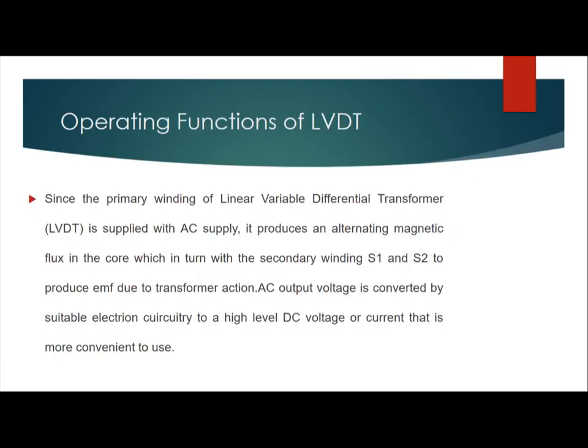In the operating functions of LVDT, since the primary winding of the linear variable differential transformer is supplied with AC supply — AC supply is for the transducer — it produces an alternating magnetic flux in the core, which links with the secondary windings S1 and S2 to produce EMF due to transformer action. The AC output voltage is converted by suitable electronic circuitry to a high-level DC voltage or current that is more convenient to use.